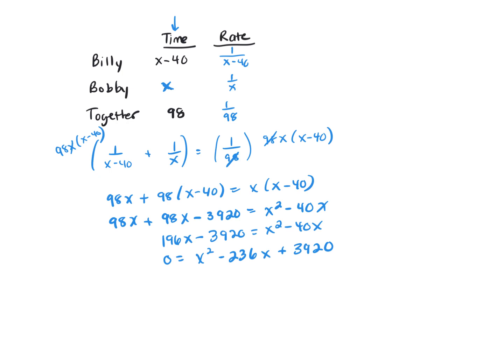I don't know how to factor that, so I'm just going to use the quadratic formula. That would be negative B, which would be negative of a negative, is positive 236, plus or minus the square root of B squared minus 4AC. Now A is 1, B is negative 236, and C is 3920.